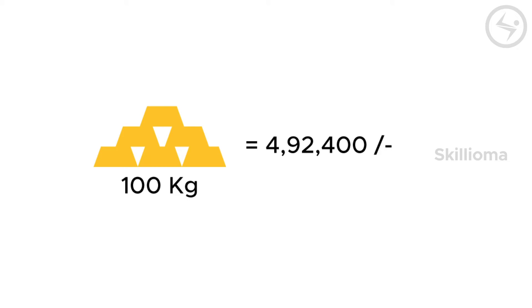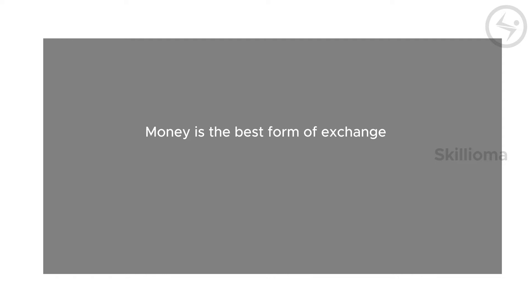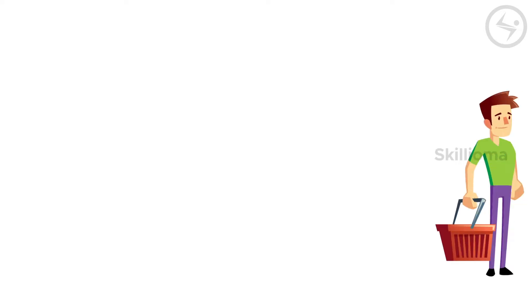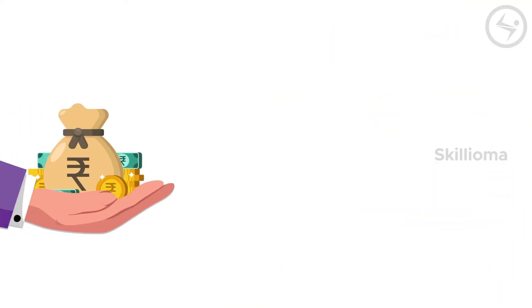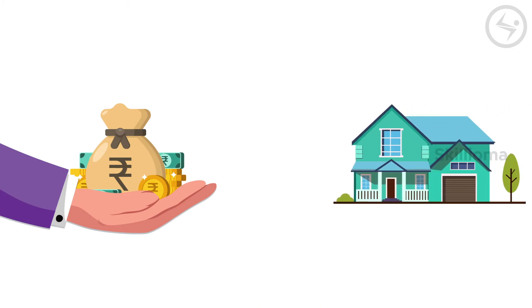There are two things you need to understand here. Number one, money is the best form of exchange. Number two, it is capable of measuring the value of a product. This means that if one person wants to buy goods and services from another person, they can do so by exchanging them for money. If you had 20 to 35 lakhs in hand, buying this house would not have been a problem at all — it is accepted all over the world.